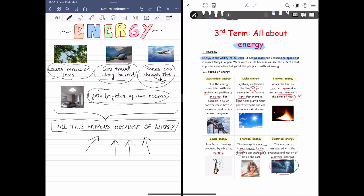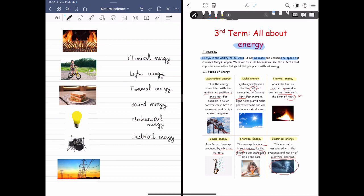So now that we have seen what is energy and the different types of energy, we are going to do an activity, which is going to be this one. Here I've placed different photos that represent different types of energy. And here I've written all the forms of energy that we have seen. I want you to match each photo with the form of energy that it represents. So I'm going to let you one minute in order to think and then I will solve it.